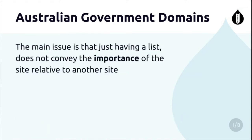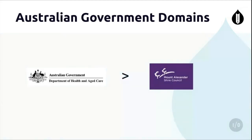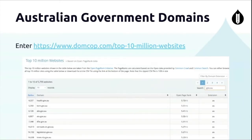But the main thing a list doesn't solve is the importance of those sites, because not every site is created equal. I didn't really mean to pick on the Mount Alexander Shire Council, but they're not quite as important as health.gov.au. So I wanted a way to quantify and measure that. This actually came about because of Toby - he found a thing with PageRank. You can download the top 10 million sites on the internet, and then using grep you've got 5,700-something government sites.